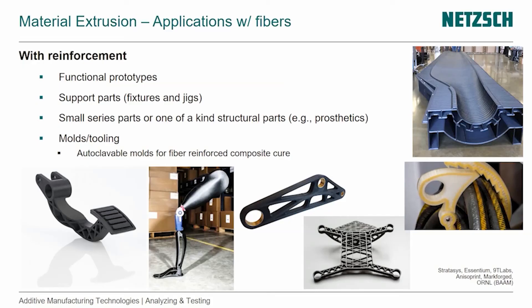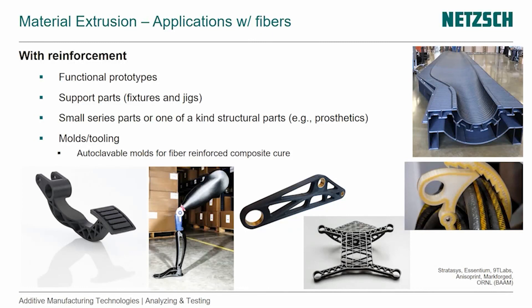Then we have processes that use reinforcement. These can also be used for functional prototypes, support parts, fixtures and jigs, and small series or one-of-a-kind structural parts. Prosthetics are a notable application — quantities are small, but 3D printing and additive manufacturing are really useful in that area. We can also produce molds and tooling. At the top right, for example, is an autoclavable mold made with fiber reinforcement for curing a fiber-reinforced composite in an autoclave, produced by Oak Ridge National Lab in Tennessee.